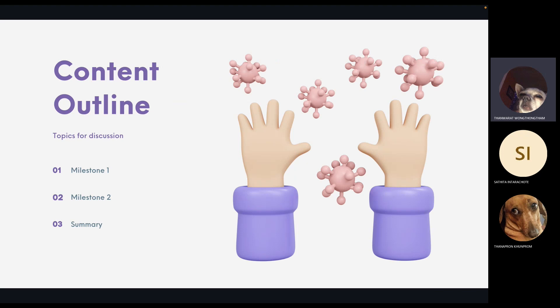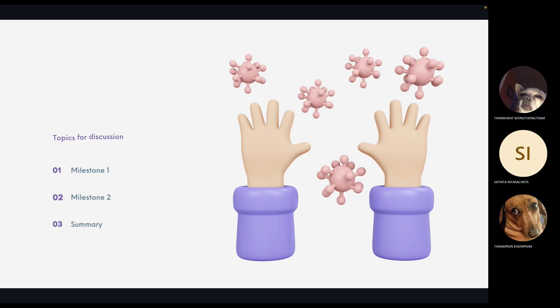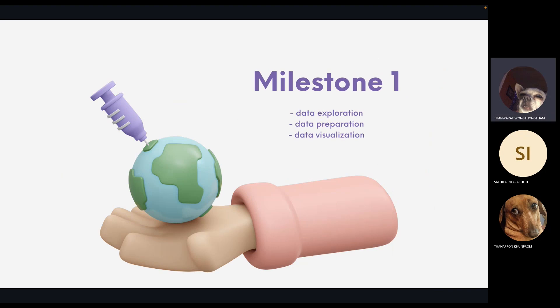For the content outline, it includes milestone 1, milestone 2, and the summary. For the first milestone, there are data exploration, data preparation, and visualization of the COVID-19 dataset.